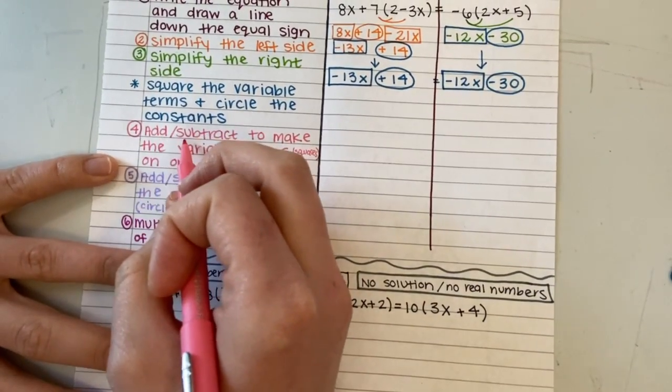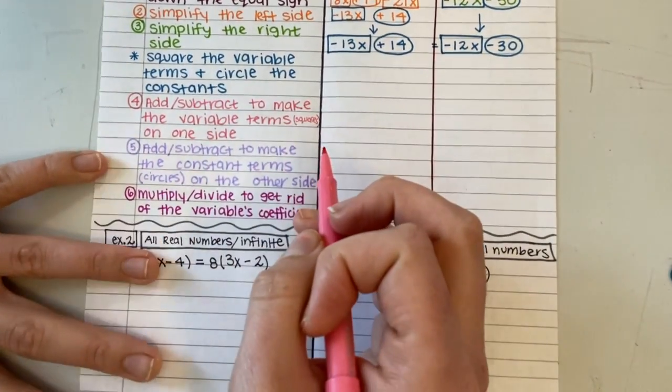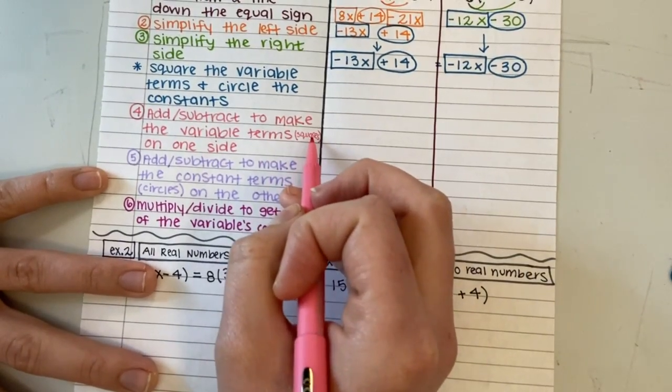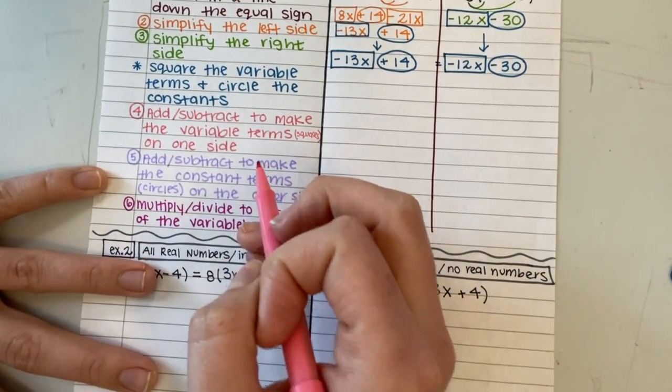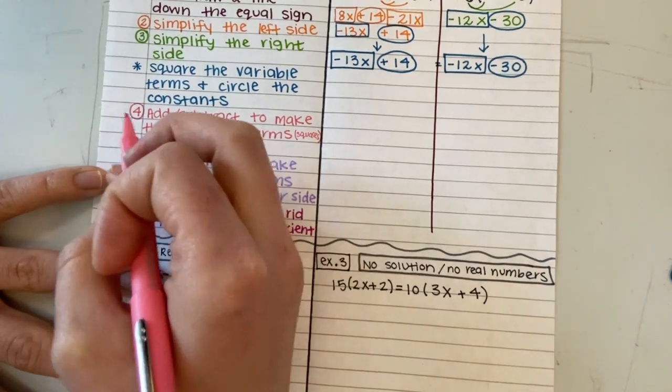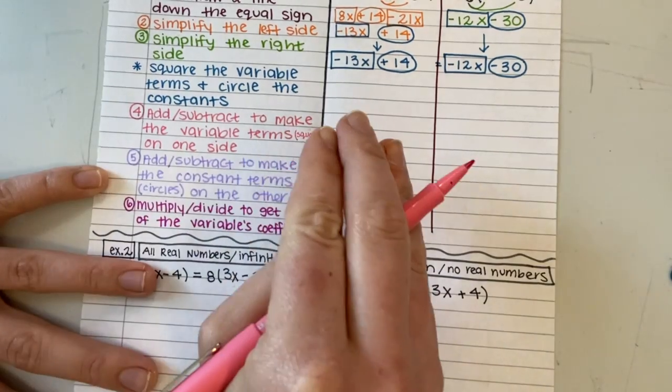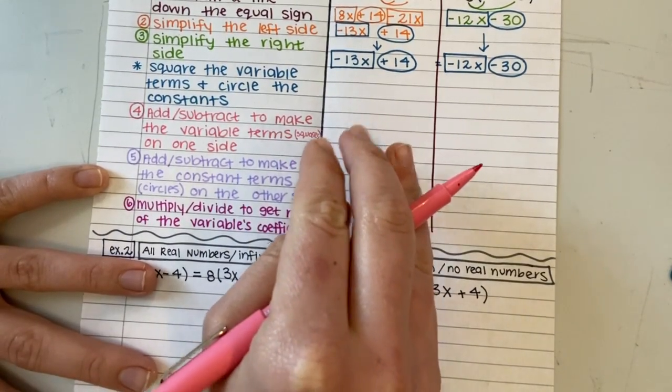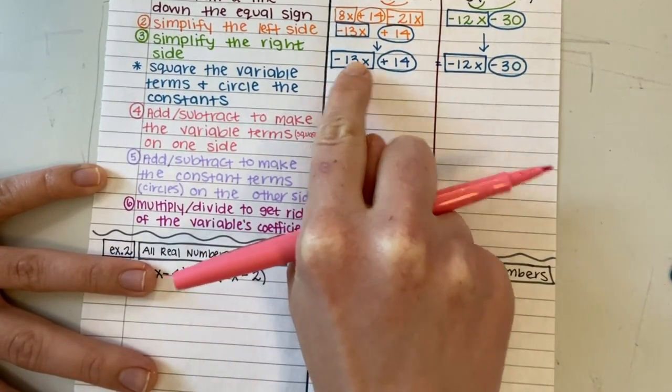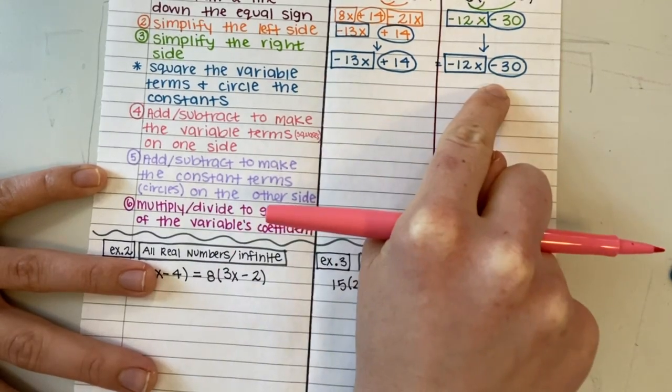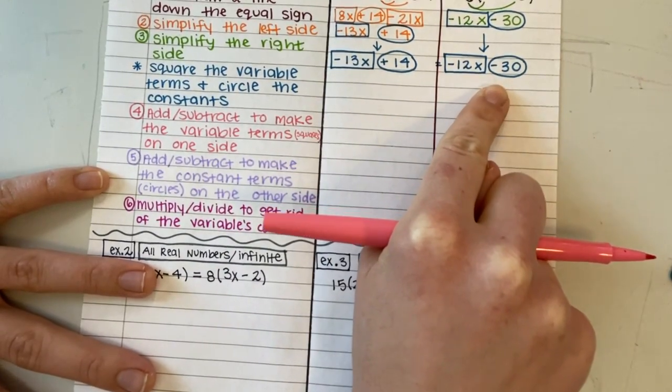Now we're going to add or subtract to make the variable terms, which is our squares, on one side. This is super important. Steps four and five, you're just doing addition and subtraction. So we're only doing addition and subtraction so that the square isn't on both sides anymore. We just want to square on one side.